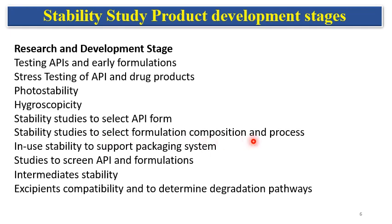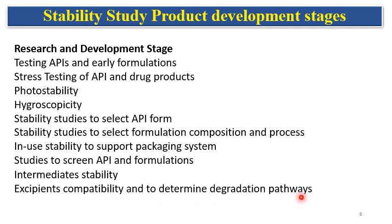Stability studies are also done to detect formulation composition challenges and process challenges, to select the formulation composition and process. In-use stability studies are done to support the packaging system, and also to determine which packaging system is best suited for the formulation. Intermediate stability is done to know which intermediates are more stable. Excipient compatibility studies are done to determine compatibility of the API with excipients. Forced degradation studies are done to determine degradation pathways for APIs.